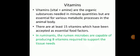Good morning friends. Today we will be discussing vitamins. Vitamins means 'vital amines' — organic substances needed in minute quantities but essential for various metabolic processes in the animal body. There are at least 50 vitamins accepted as essential food factors. Rumen microbes are capable of producing vitamin B required to support the tissue needs of the body.